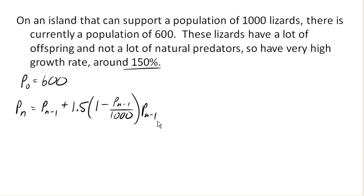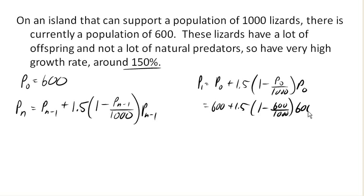So if we started calculating out a couple years, our population after one year would be P0 plus 1.5 times 1 minus P0 over 1,000 times P0. Or in other words, 600 plus 1.5, 1 minus 600 over 1,000 times 600. And if I calculate that out, I get 960.